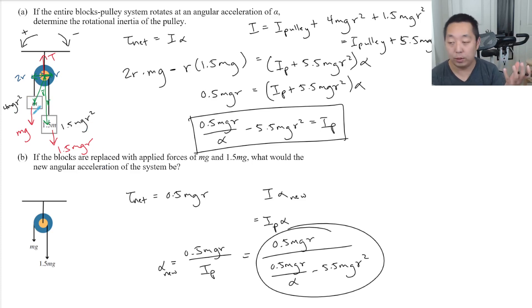But the block is clearly going to accelerate downward. Which means that the tension has to be smaller than Mg, which is why this guy has a different acceleration than this guy.